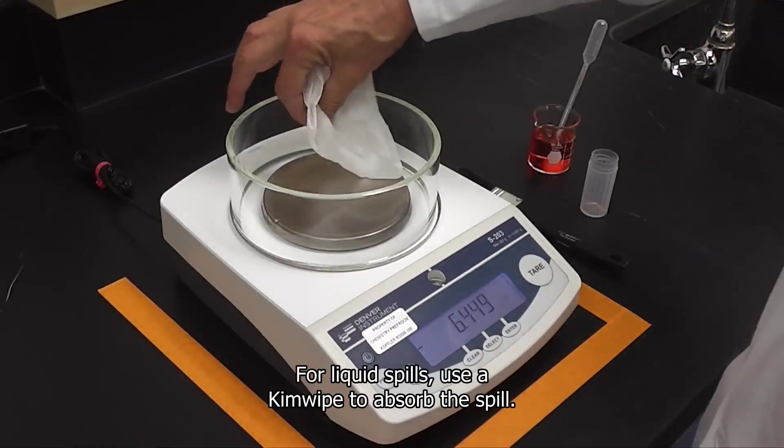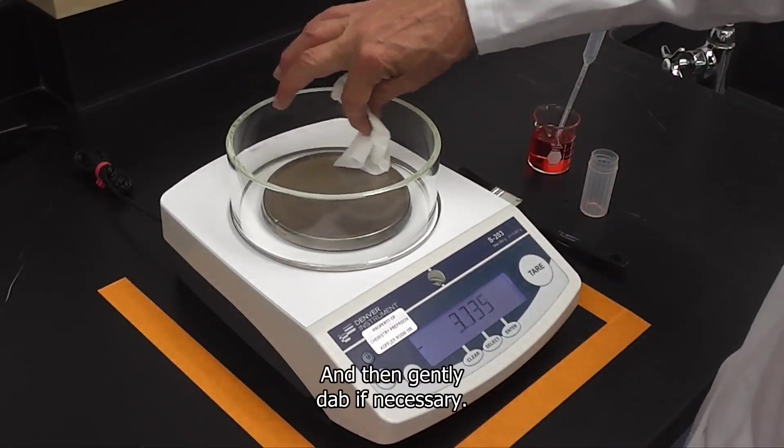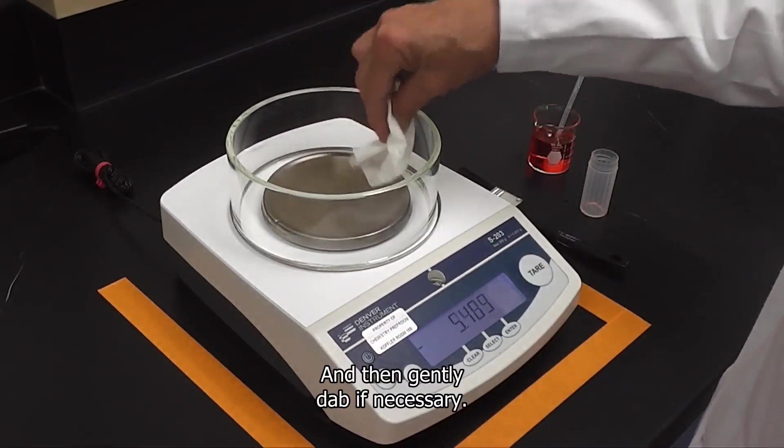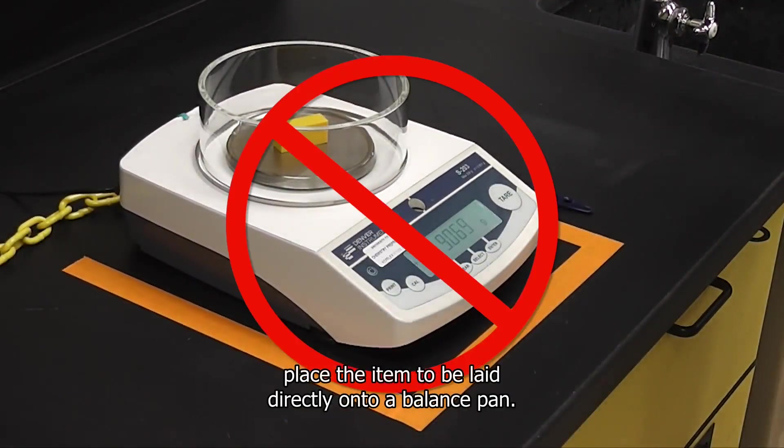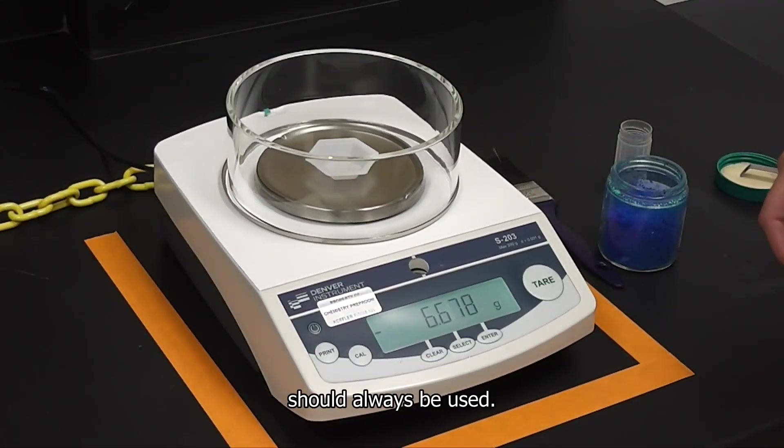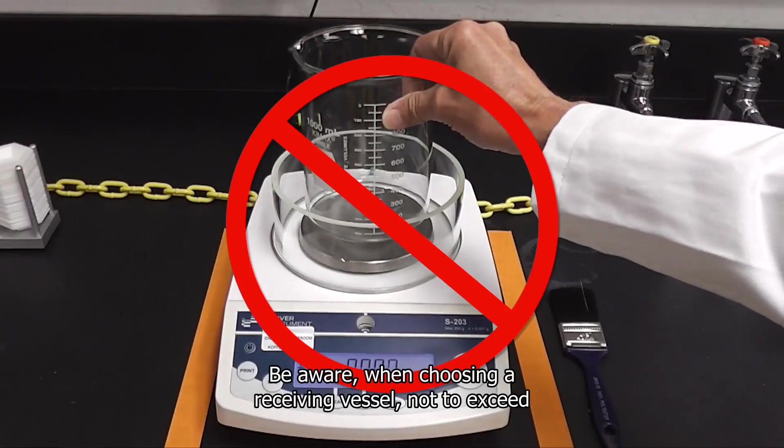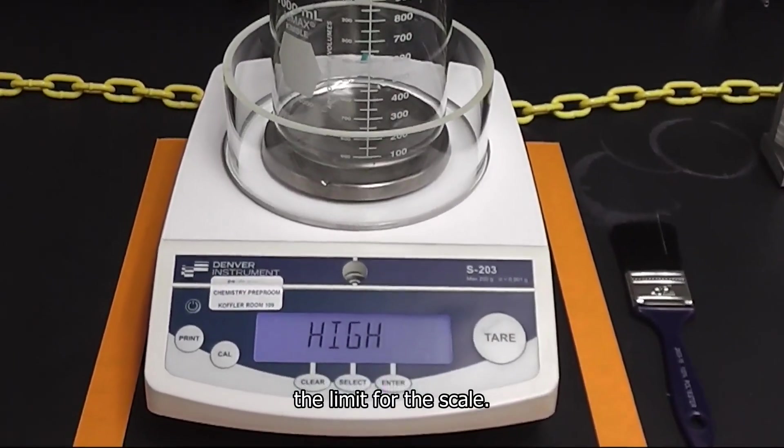For liquid spills, use a chem wipe to absorb the spill and then gently dab if necessary. When using a balance, you should never place the item to be weighed directly onto a balance pan. A weigh boat or receiving vessel such as a vial or beaker should always be used. Be aware when choosing a receiving vessel not to exceed the limit for the scale.